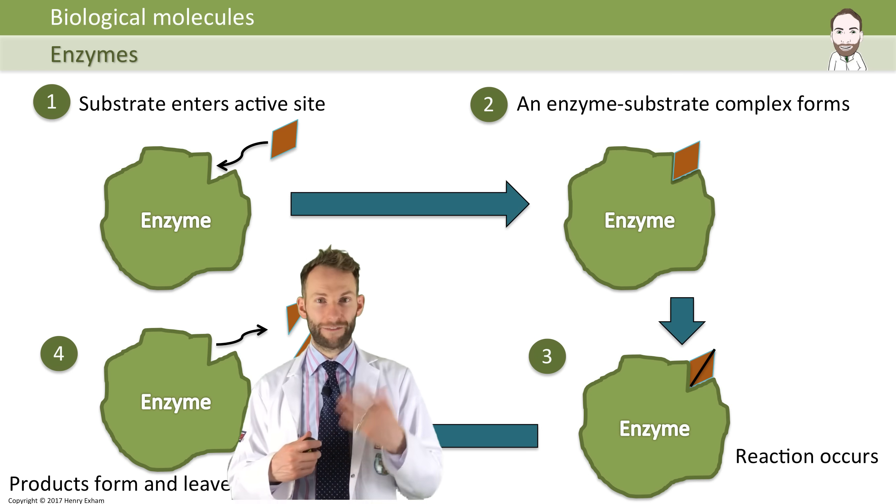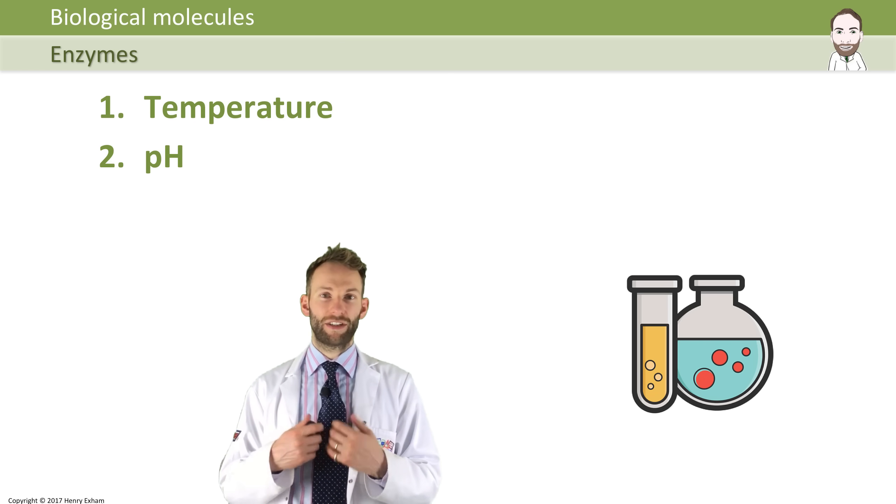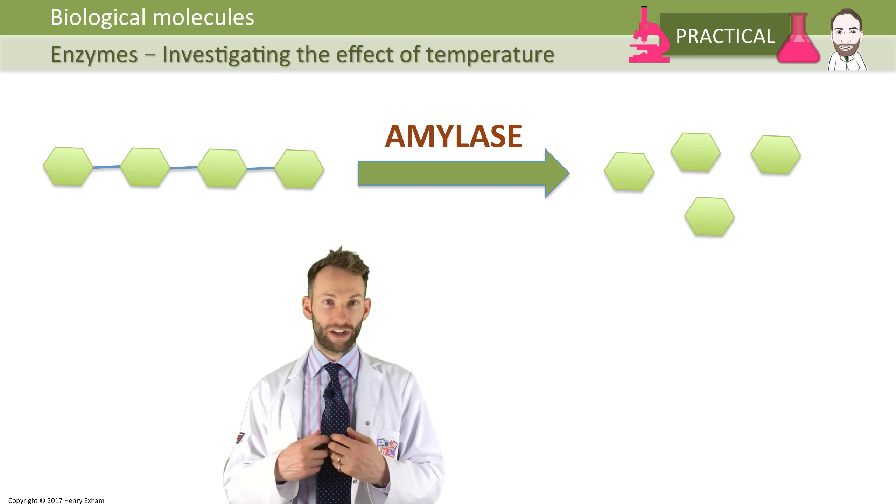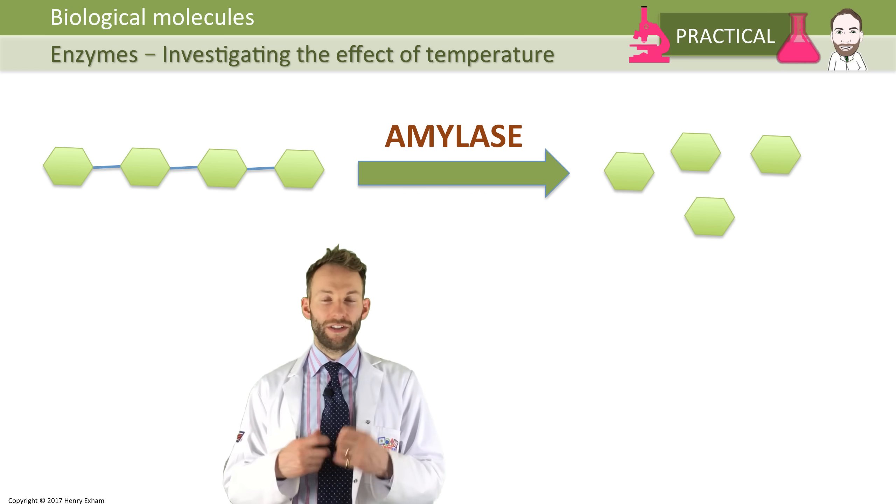Enzymes will be affected by a couple of things: they're affected by temperature and they're affected by pH. A good example if you're looking at temperature is to look at the enzyme called amylase. Amylase is an enzyme that's used to break down starch in your diet into smaller molecules like glucose.